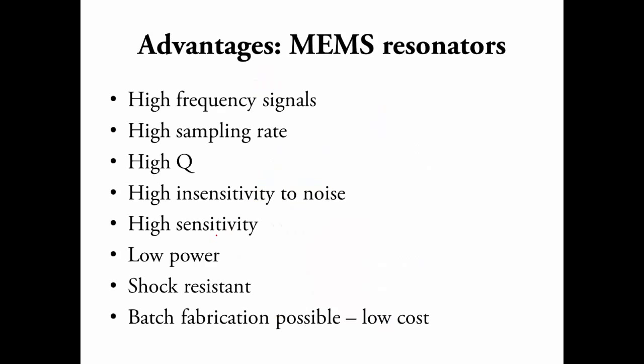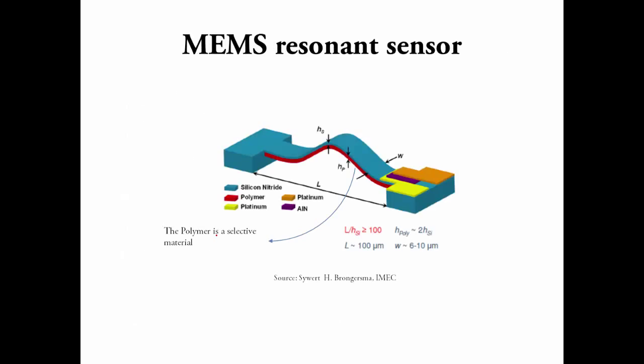Summarizing MEMS resonators, they use high frequency signals which allows for high sampling rates and immunity from low frequency noise. They have high Q which results in good insensitivity to noise and higher sensitivity. It consumes low power. It is not susceptible to shock and costs very little to manufacture. This is a representation of a MEMS resonance sensor.